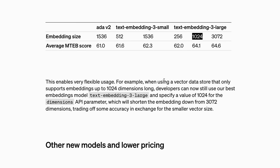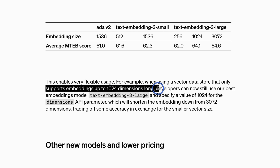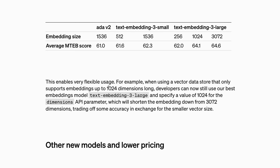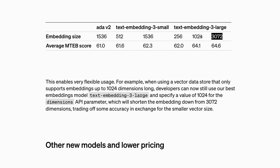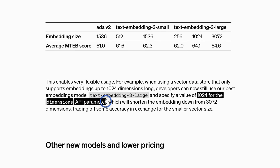Why is this significant? When creating embeddings, you need to store them in a vector store. The vector stores currently available support specific strict dimensions — for example, if a vector store supports up to 1024 dimensions, you cannot use the larger size. That's why having the ability to use much shorter sizes is important. You can now use these new embeddings as a replacement for your own embeddings without worrying about dimensions, since the embedding dimension is just a parameter to the API, which makes it a lot easier.